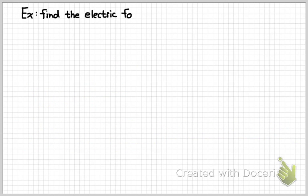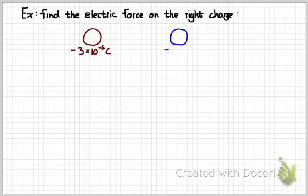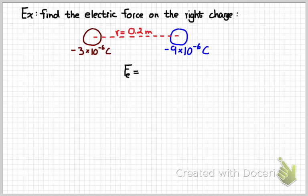As a simple example, suppose we were asked to find the electric force on one of these two charges. In this case, we'll look at the one on the right. We've got two charges. Both are negative. One is negative 3 times 10 to the negative 6 Coulombs. The second is negative 9 times 10 to the negative 6 Coulombs. And they're 0.2 meters apart.